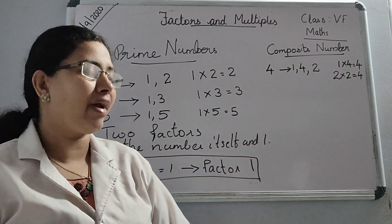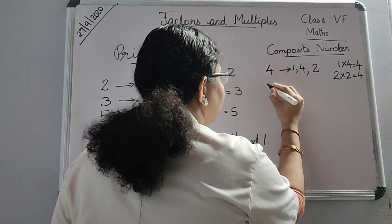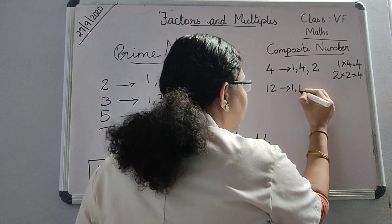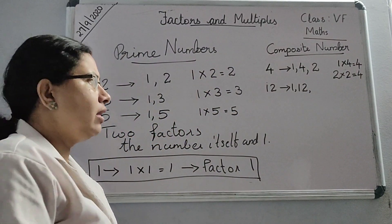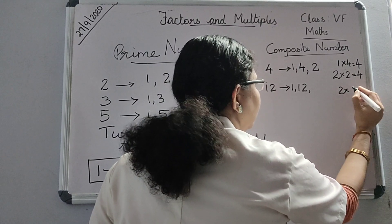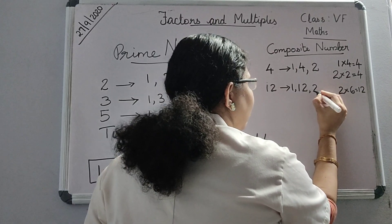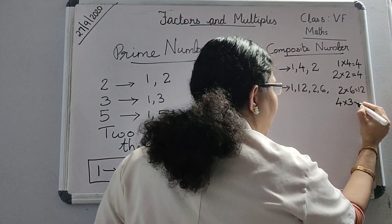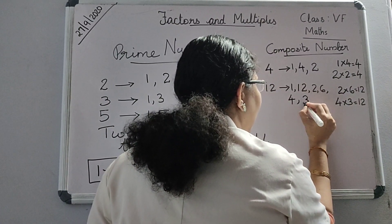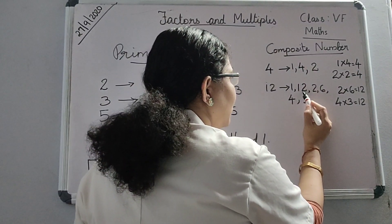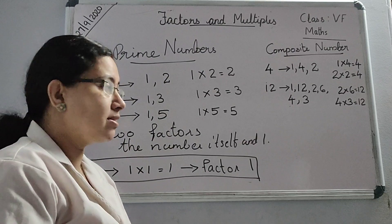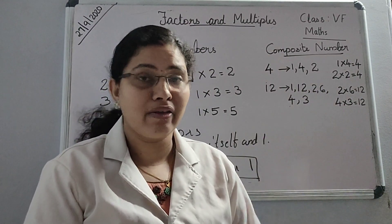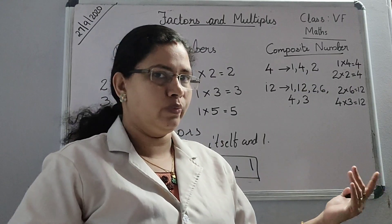So how many factors does 4 have? 3 factors. Let us check another number: 12. 1 is a factor, 12 is a factor. When you multiply 2 into 6, you get 12, so 2 and 6 are factors. If I multiply 4 into 3, I get 12, so 4 and 3 are also factors. How many factors did I get? 1, 2, 3, 4, 5, 6 — there are 6 factors for 12.